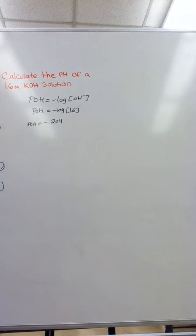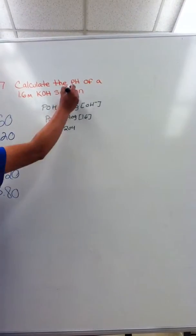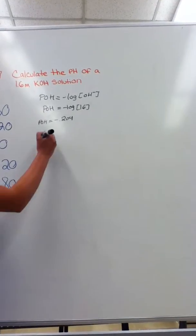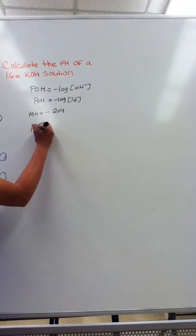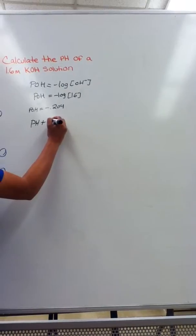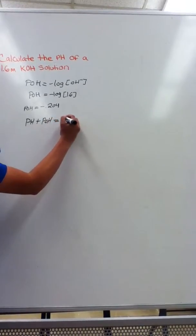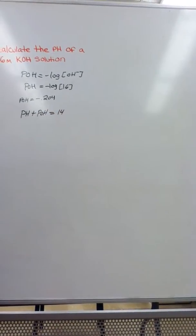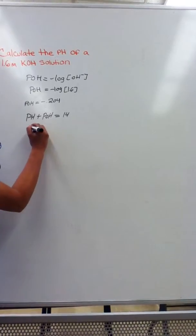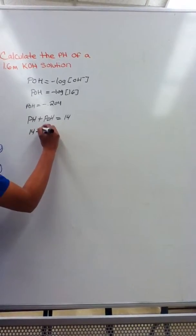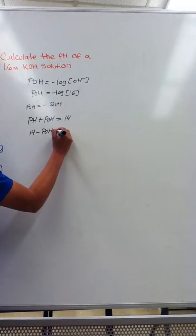But since the question is asking for the pH, what you're going to do is this formula. pH plus POH is equal to 14. So if you rearrange this formula, it'll be 14 minus POH is equal to pH.